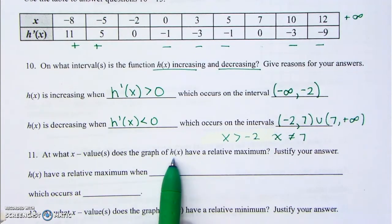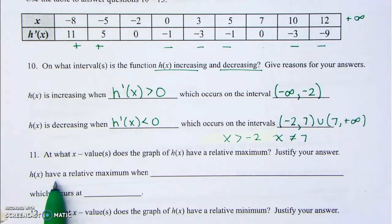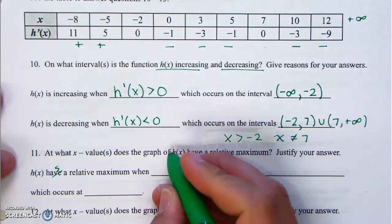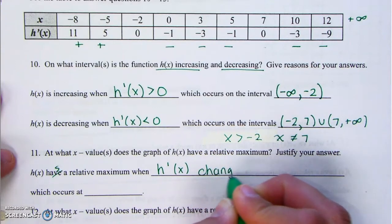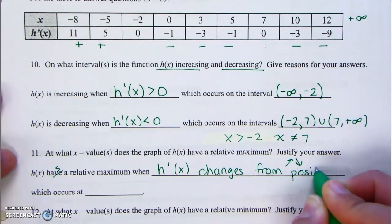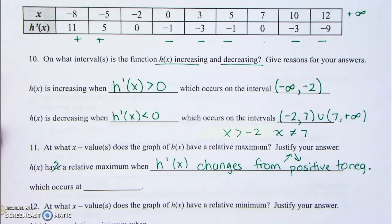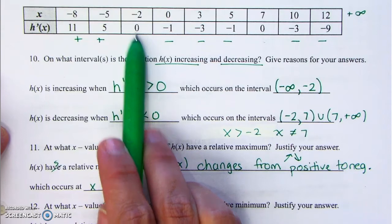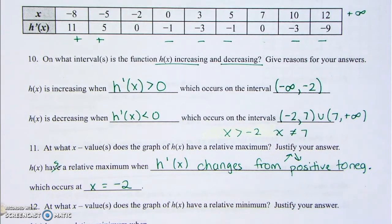At what x value does the graph of h have a relative maximum? Justify your answer. h has a relative maximum when h prime of x changes from positive to negative, which occurs at x equals negative 2.